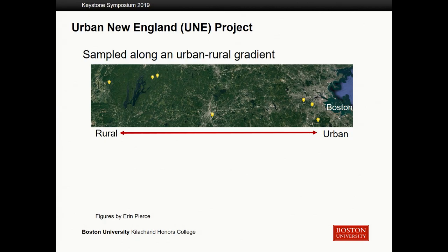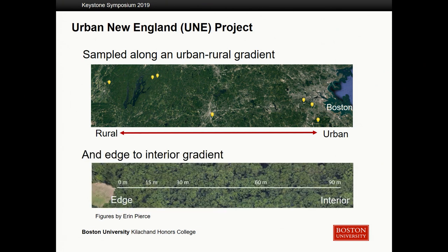I worked as part of a greater project in the Templer and Huteria Labs on the Urban New England project. I took soil samples across seven sites on an urban-to-rural gradient, going from the most urban in Boston — represented by three yellow balloons — all the way out to our most rural site in Petersham, Massachusetts. At each site, I sampled along an edge-to-interior gradient to get an idea of how forest fragmentation and urbanization factors are impacting nitrogen cycling.